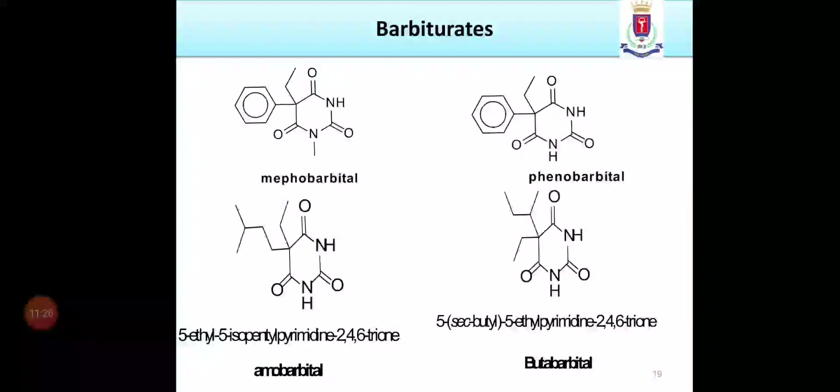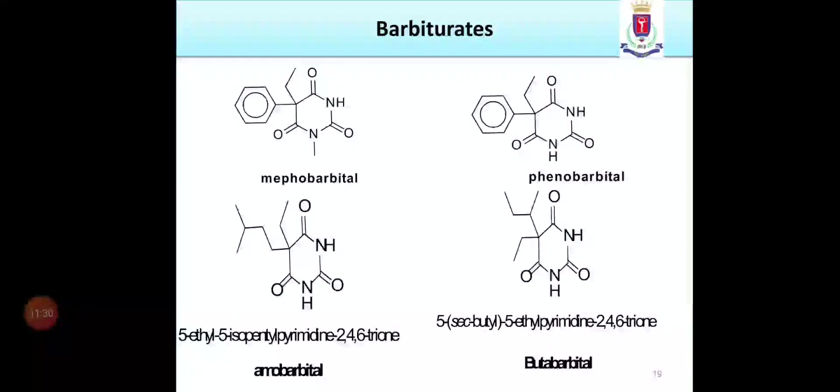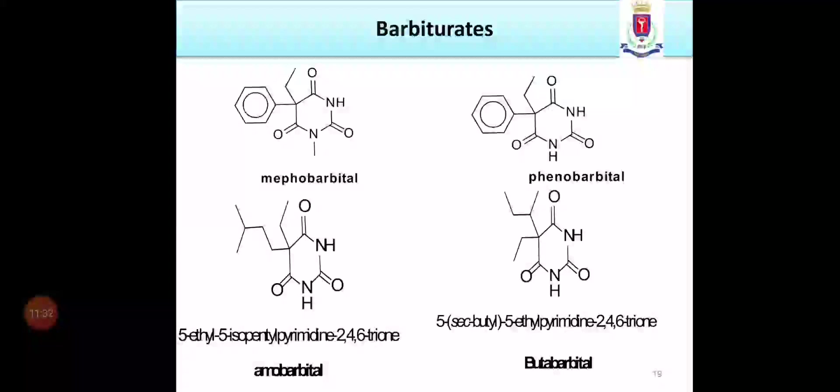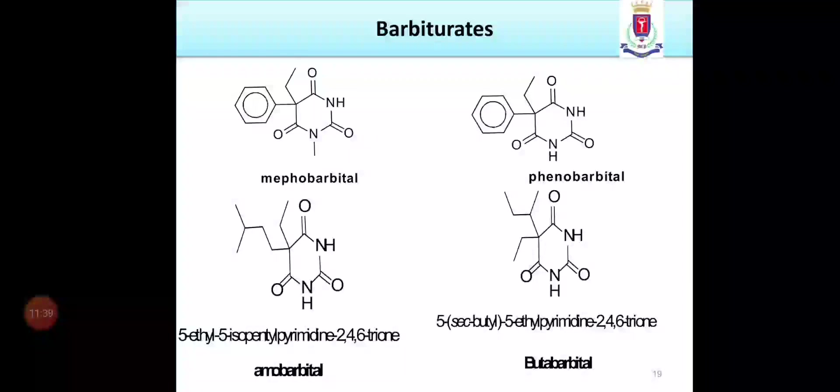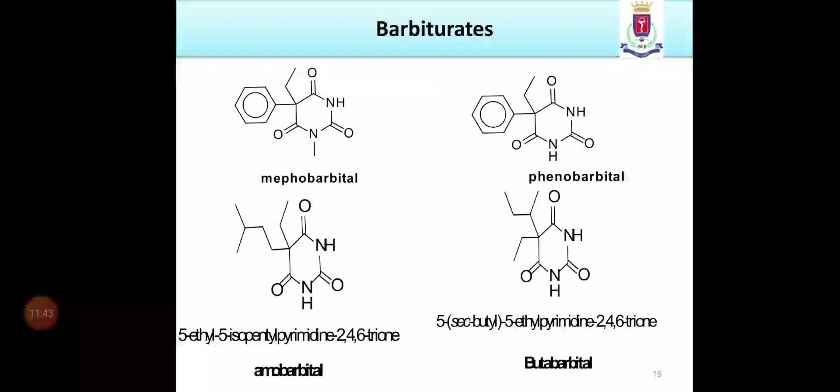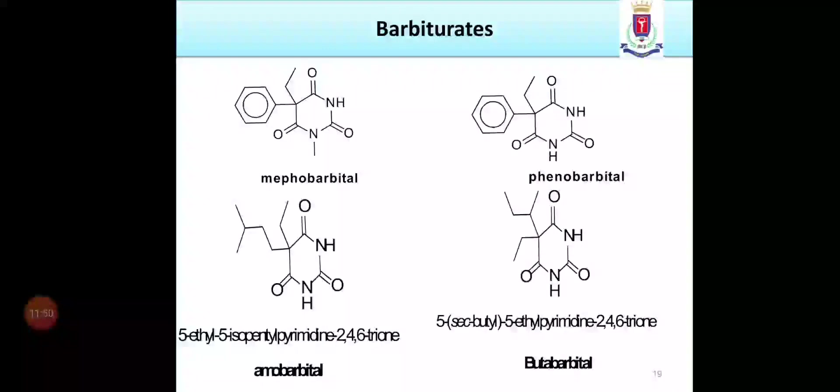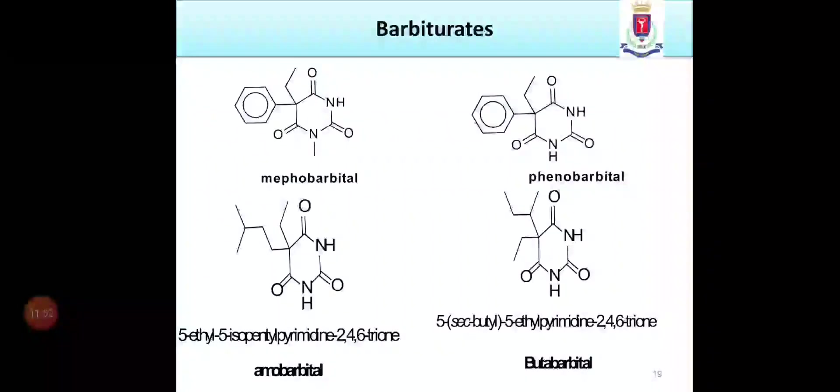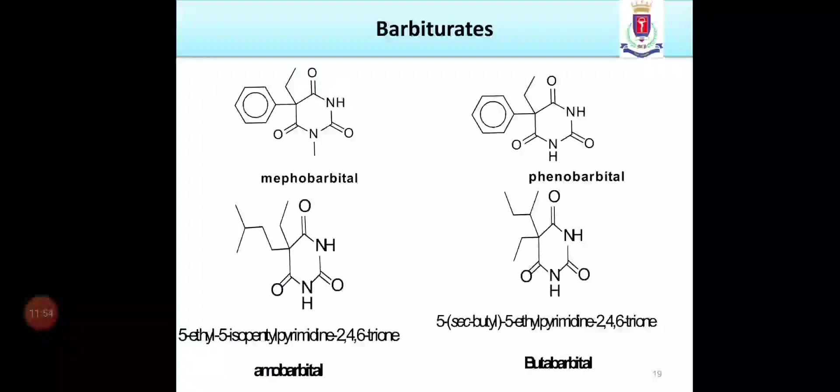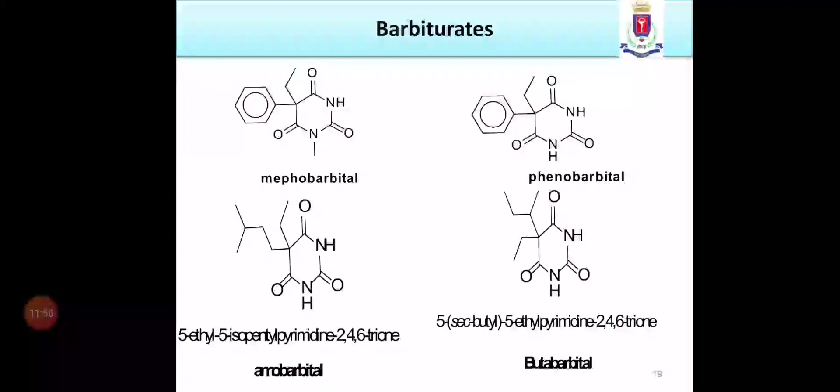Next barbiturate is amobarbital. Amobarbital is again basic nucleus is the same, only the difference is at 5 position. In amobarbital, the 5 position is substituted with 5-ethyl and 5-isopentyl functional groups. In butabarbital, the 5 position is, one hydrogen is substituted with a secondary butyl and the 2nd hydrogen of 5 position is substituted with ethyl functional group and rest of the structure is again common.